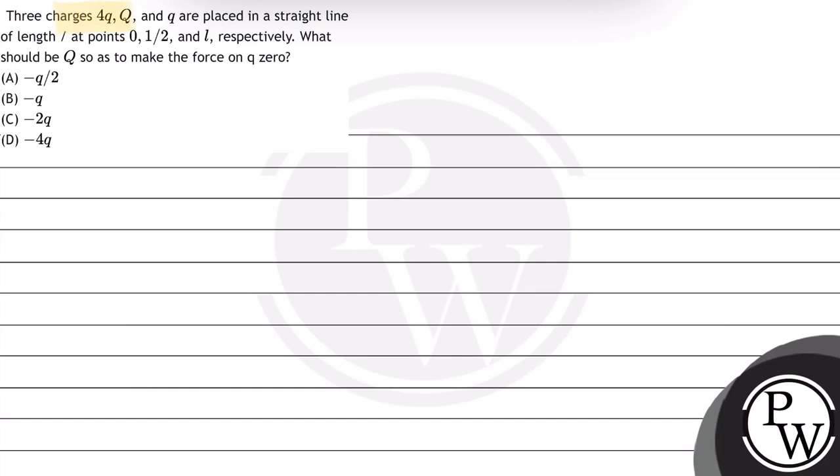The question says three charges 4Q, Q, and q are placed in a straight line of length l at point 0, 1 by 2, and l respectively. What should be the value of Q so as to make the force on small q zero?